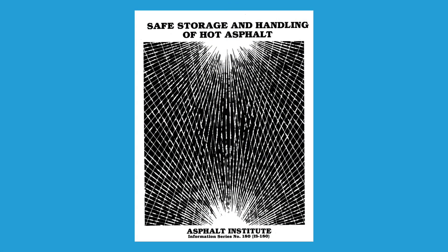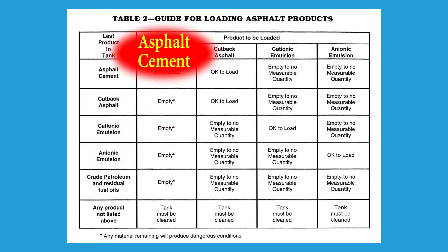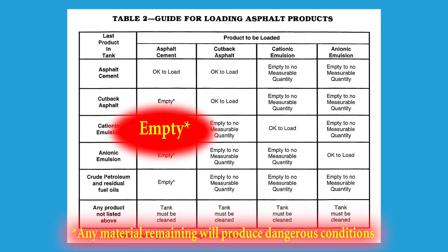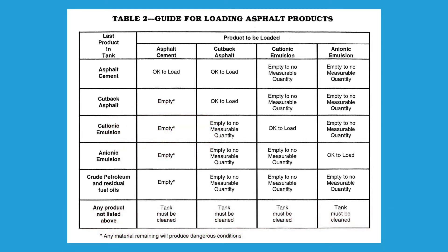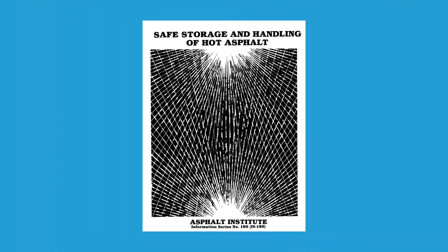The Asphalt Institute has published a chart in a booklet called Safe Storage and Handling of Hot Asphalt. The chart lists the last product used versus the product to be loaded, so one can see what procedure is required before loading new material. For instance, if the last load was a cationic emulsion and the next load is to be an AC asphalt, you must completely empty the tank of any previous material and ensure no moisture is present. There are various procedures to prepare the tank for switching material types — it can be as simple as loading at a slow rate or it might involve a complete flush. The operator must use extreme care and be knowledgeable of the operation. Knowledge of the specific product is absolutely necessary for the safe operation of the distributor. Further information on liquid asphalts may be obtained from the Asphalt Institute or your asphalt supplier.